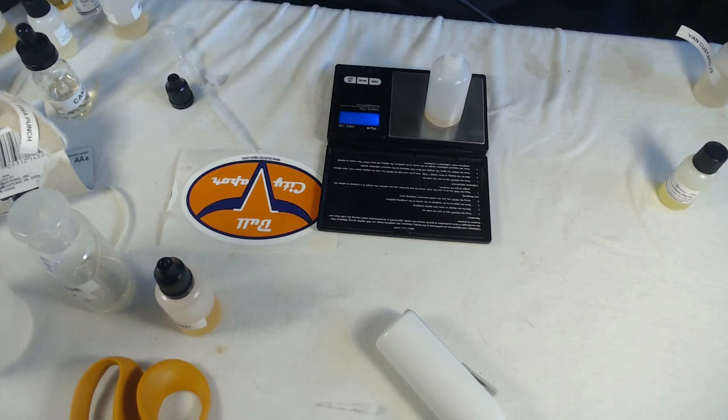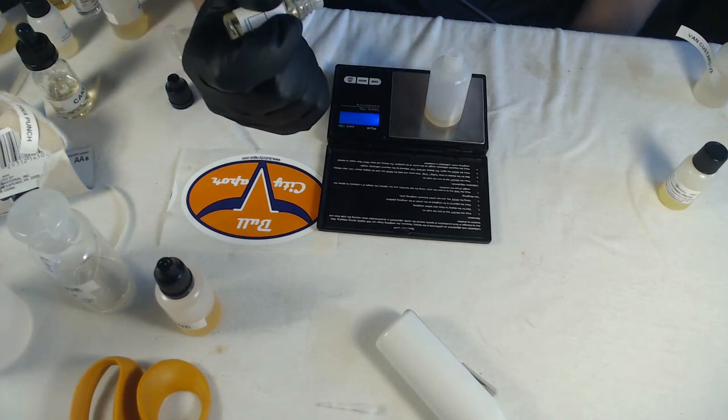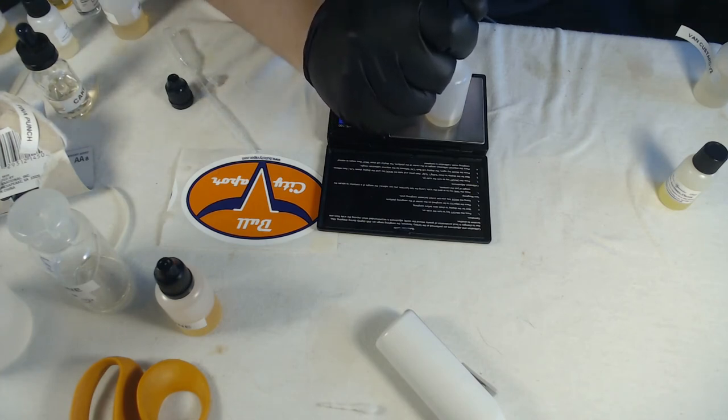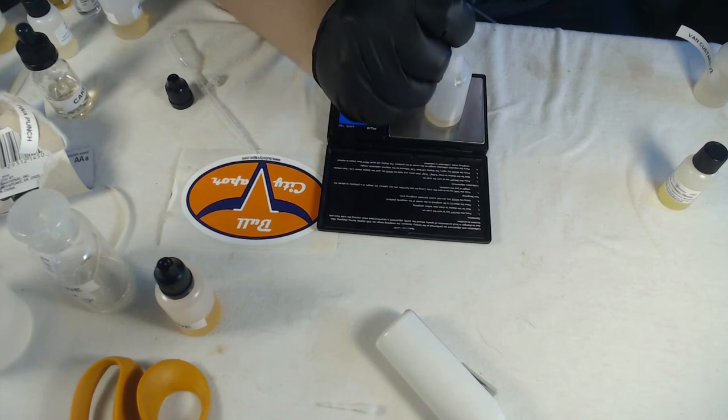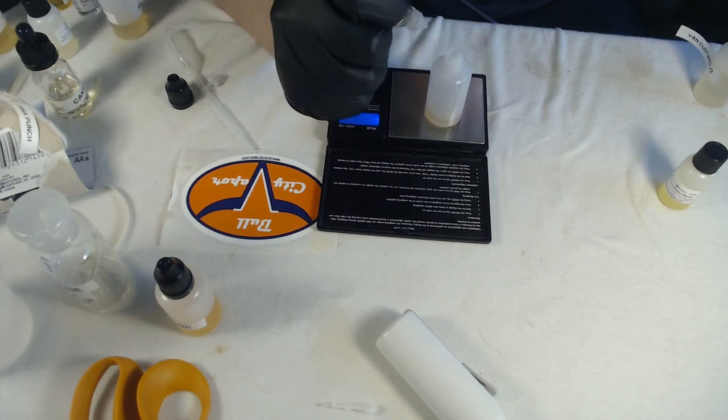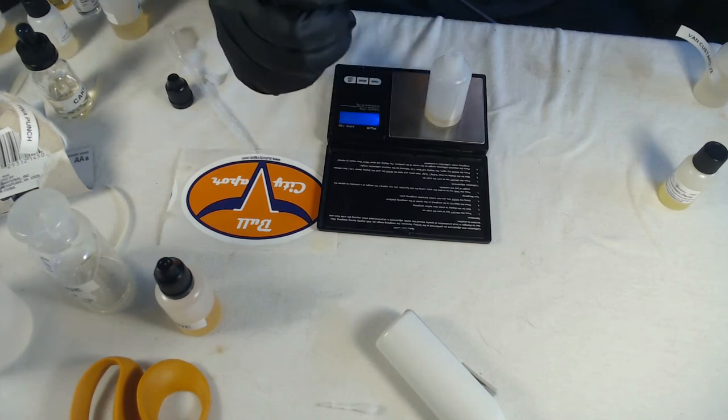Next up is vanilla bean gelato. This is in at two percent or 0.6 grams, and this is there to build that ice cream note. This is a hard bottle to squeeze. 0.6 grams is in.